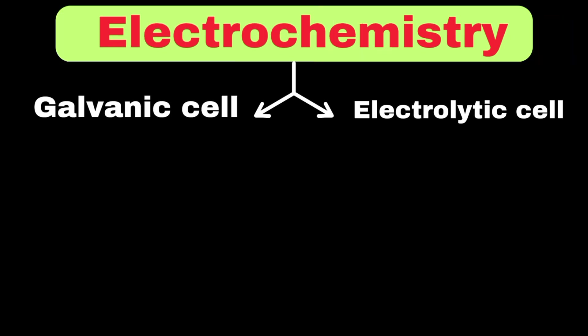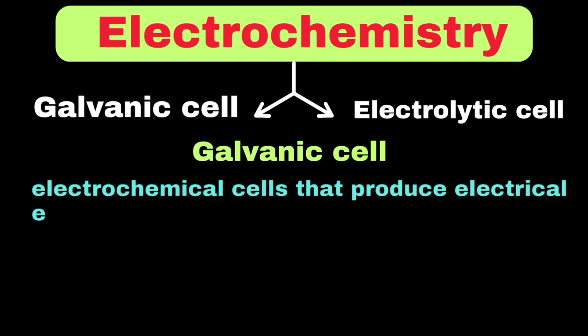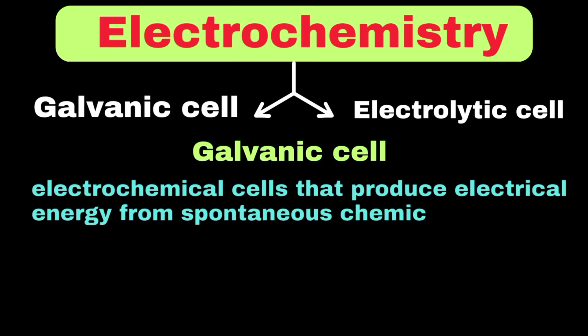First, let's understand galvanic cells deeply. Galvanic cells can be defined as electrochemical cells that produce electrical energy from spontaneous chemical reactions.